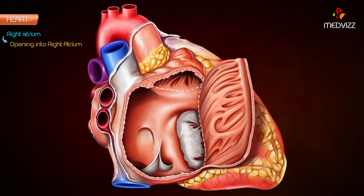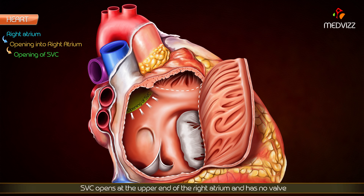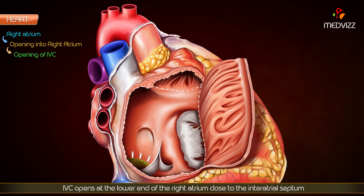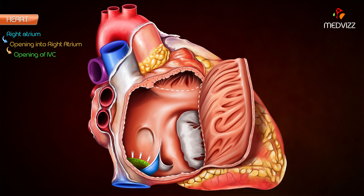There are a number of openings into the right atrium. The superior vena cava opens at the upper end of the right atrium and has no valve; it returns blood from the upper half of the body. The inferior vena cava opens at the lower end of the right atrium close to the interatrial septum, and is guarded by a rudimentary non-functioning semi-lunar valve called the valve of the inferior vena cava.